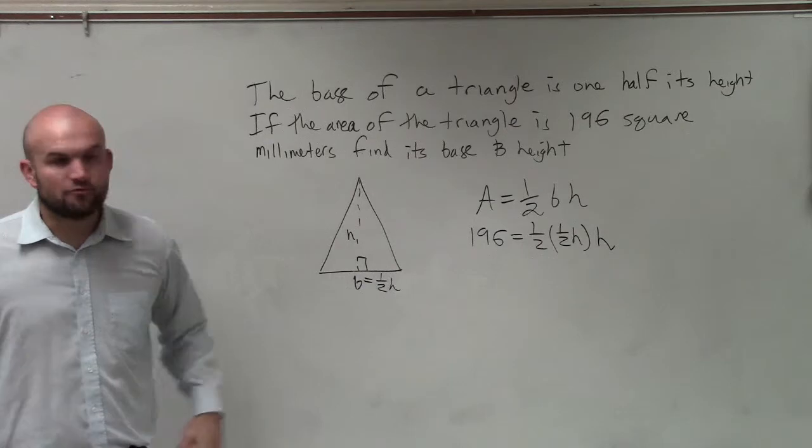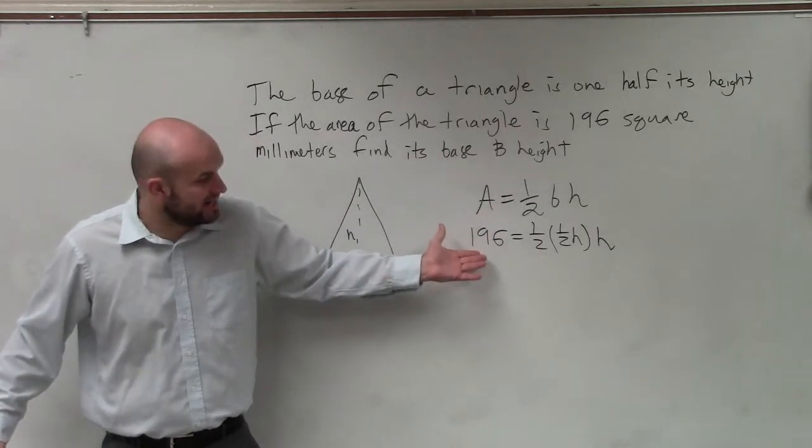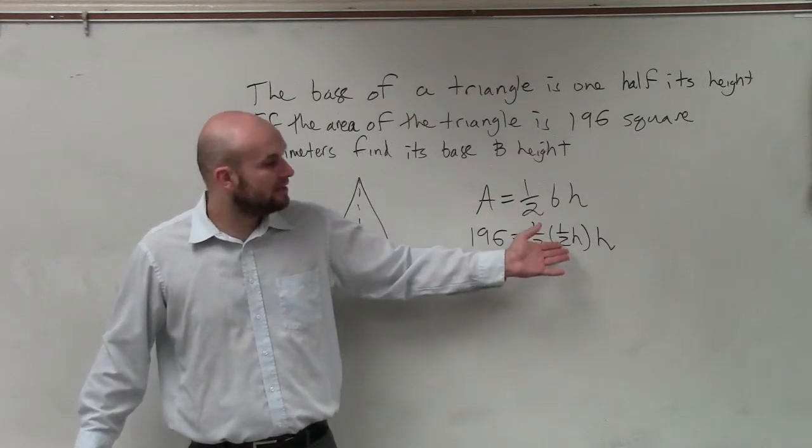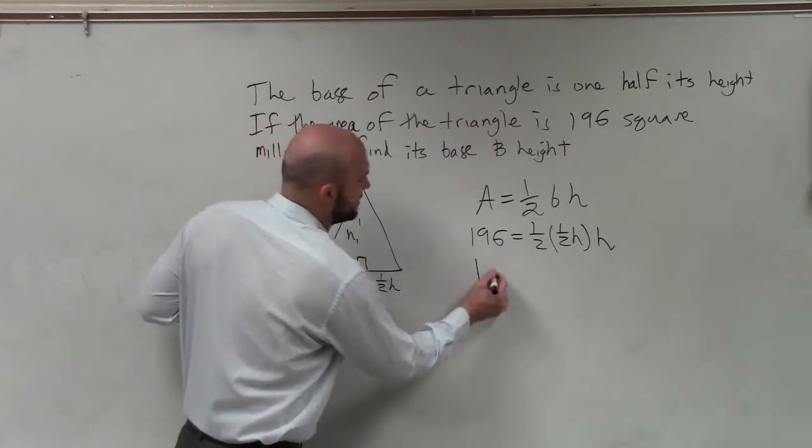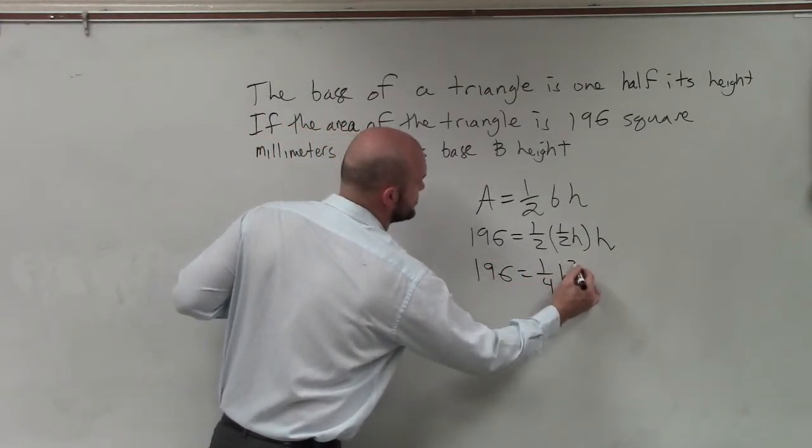You guys see what I did? I rewrote the exact same equation, but now I substituted in 196 for a and 1 half h for b. All right? So now, you can multiply this so I have 196 equals 1 fourth h squared.